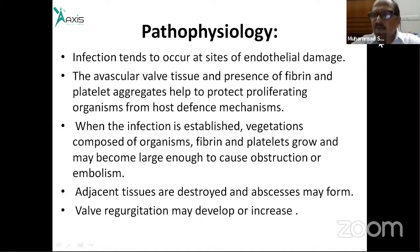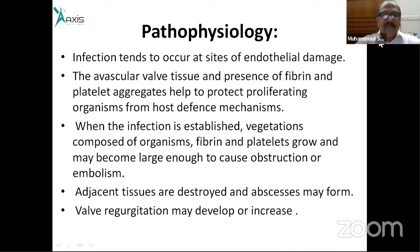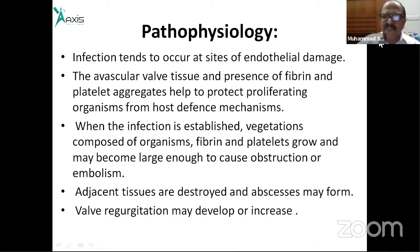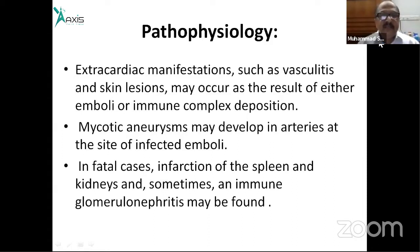When infection is established, vegetation composed of organisms, fibrin, and platelets grows and may become large enough to cause obstruction or embolization. Adjacent tissue may be destroyed and abscesses may form. Valves may develop regurgitation, and extra-cardiac manifestations such as vasculitis and splinter hemorrhages may occur as a result of emboli or immune complex deposition. Mycotic aneurysms may develop at sites of infected emboli.